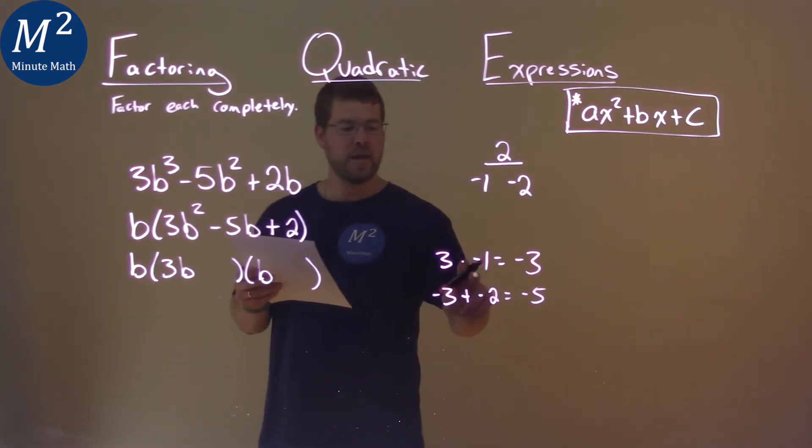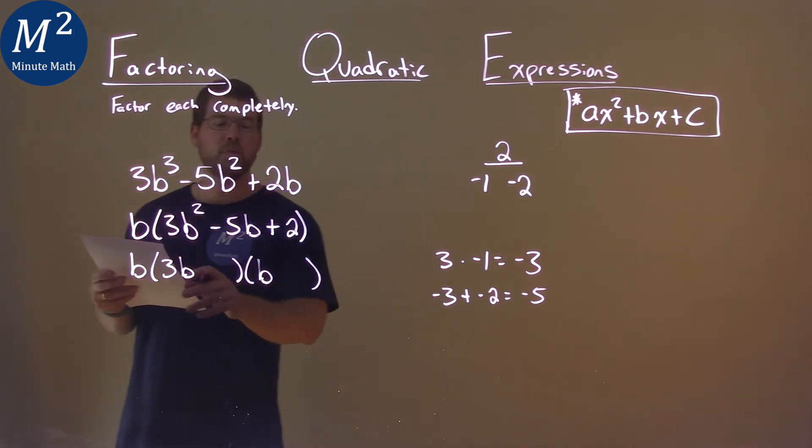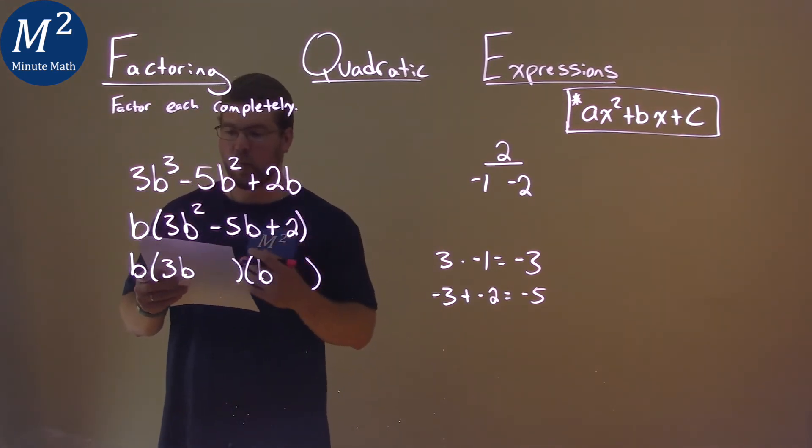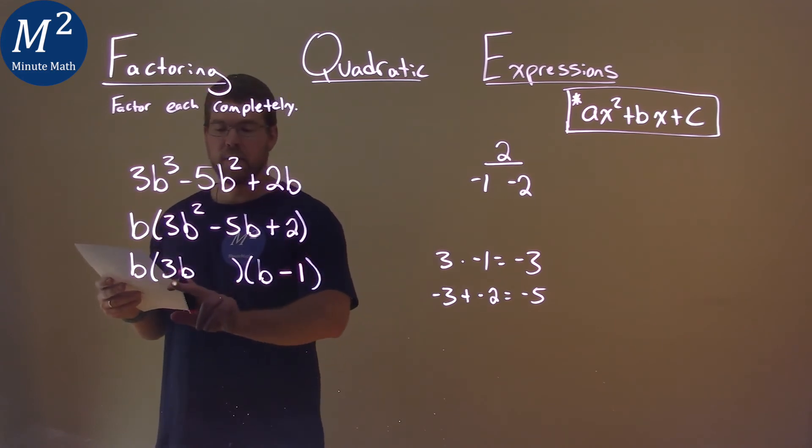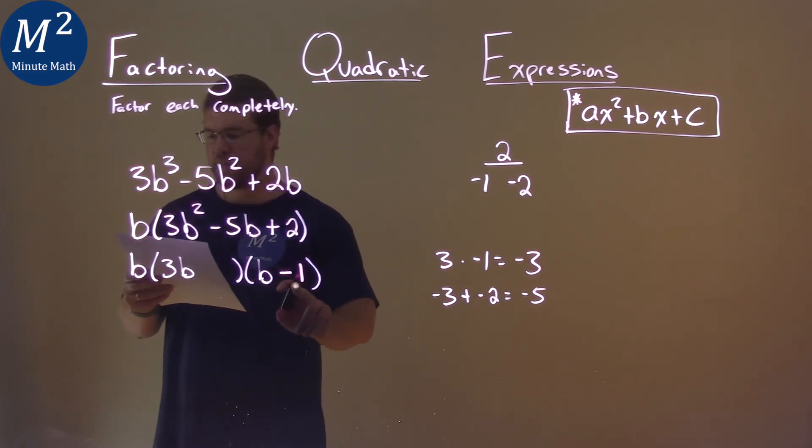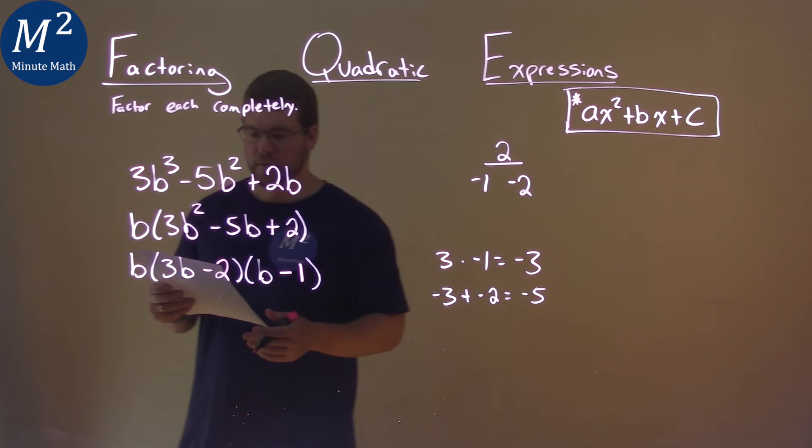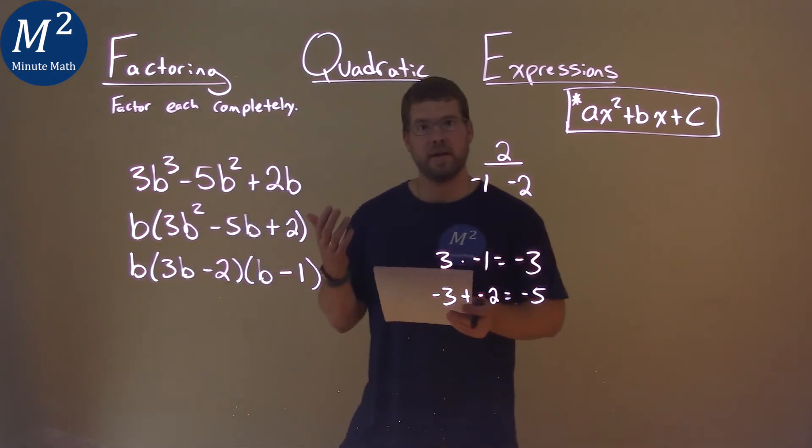So our two numbers are negative 1 and negative 2, but the order is what we're really caring about. The 3 gets multiplied by the negative 1. So we put a minus 1 on this side, because that would cause the 3 to be multiplied by the negative 1. Put a minus 2 here, and now we have our final answer.